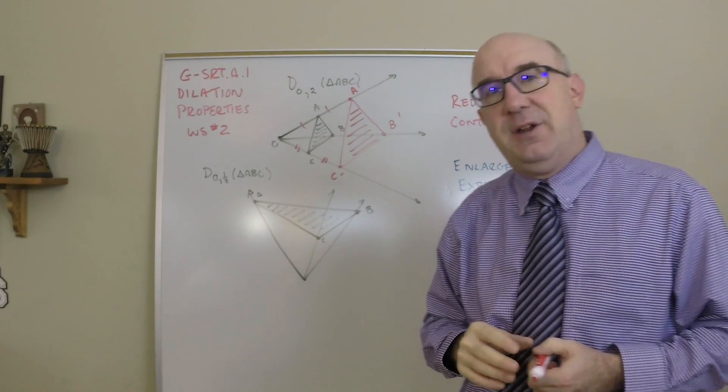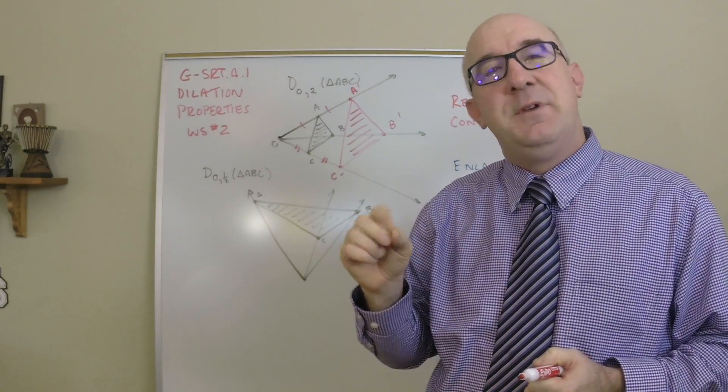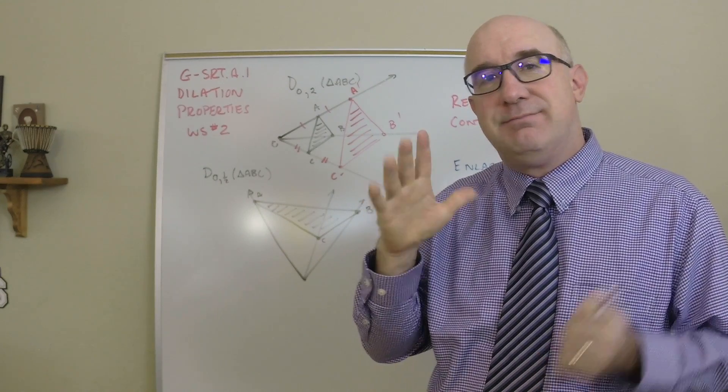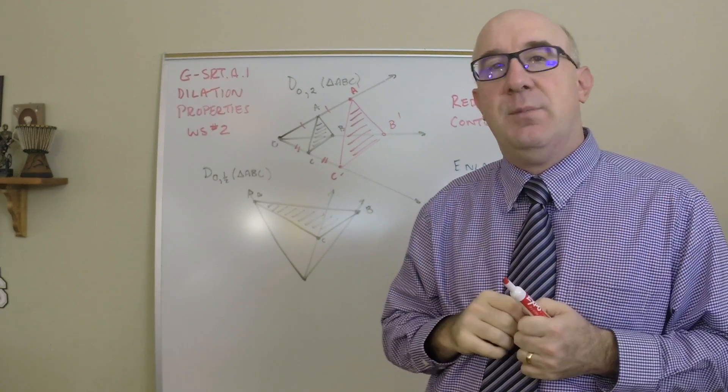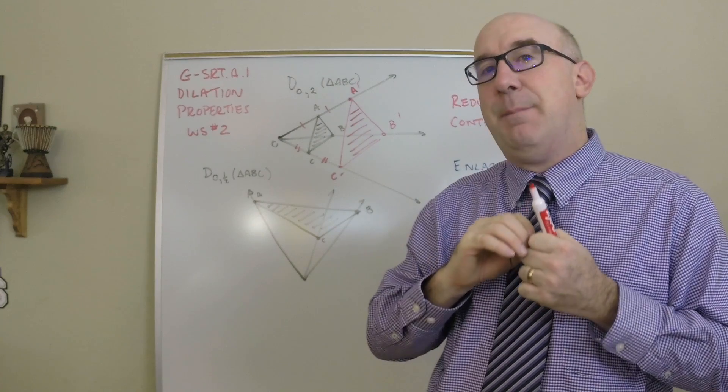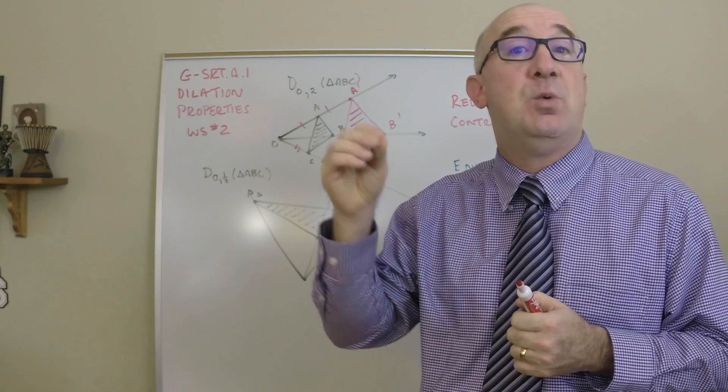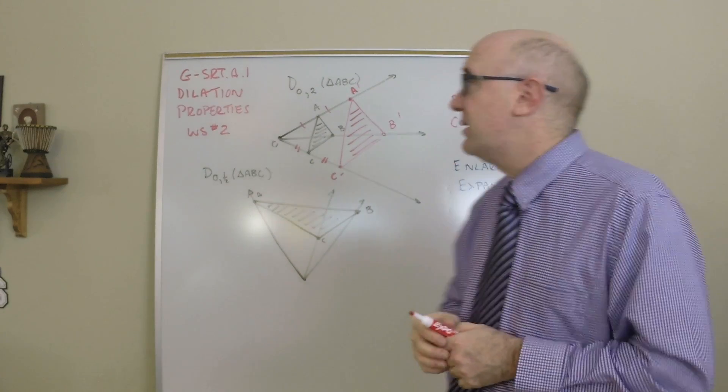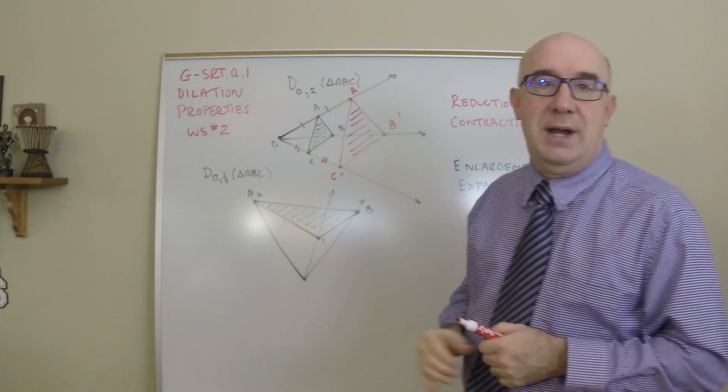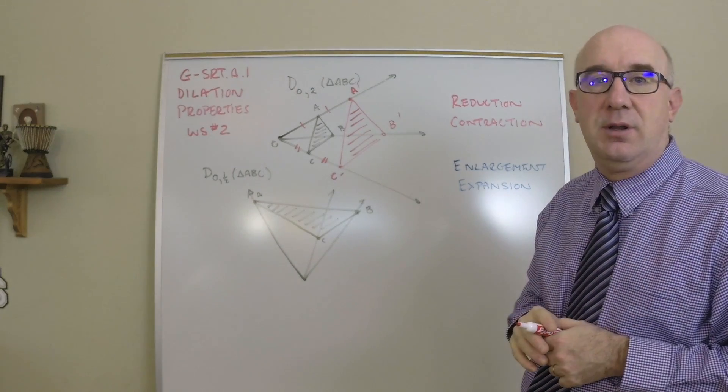Basically, if the scale factor is greater than 1, if you multiply something by 1, you stay the same. If you multiply anything by anything bigger than 1, 1.1, 1.0001, we still get bigger. As long as the scale factor exceeds 1, it is an expansion or an enlargement.